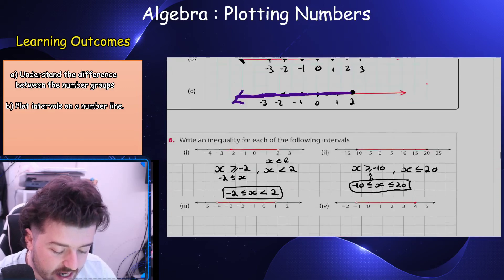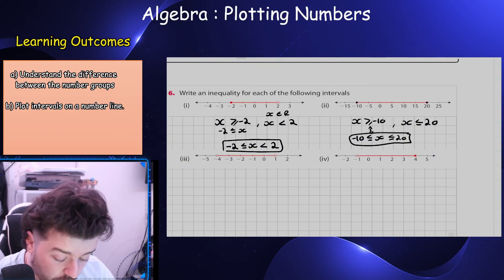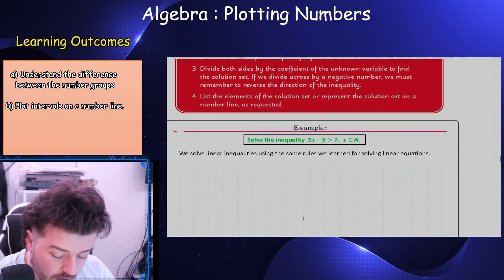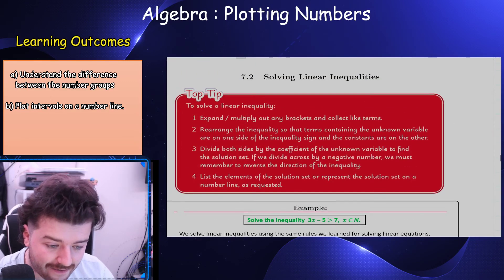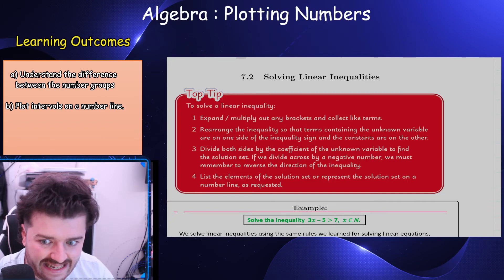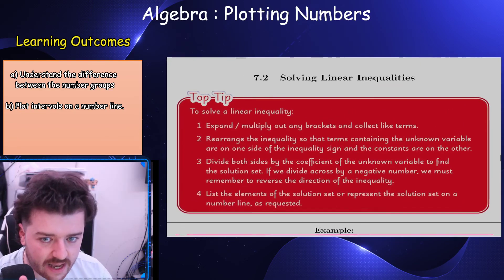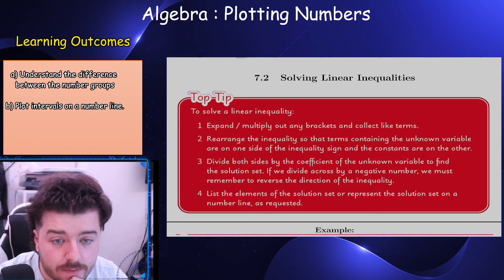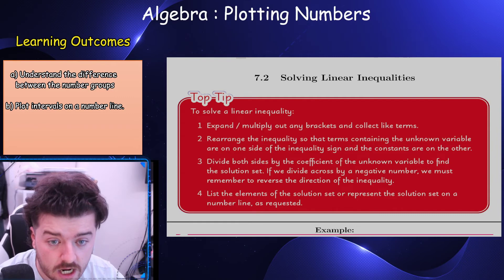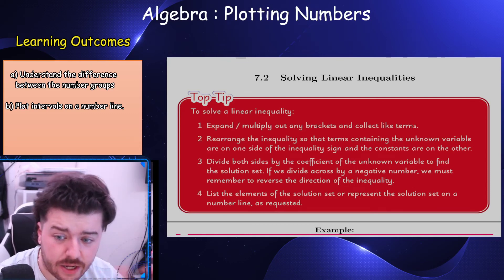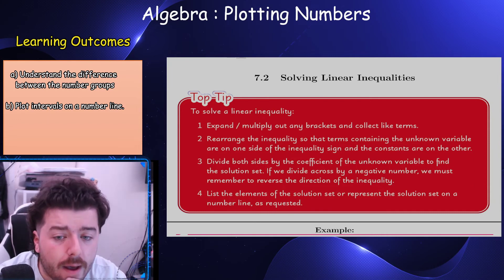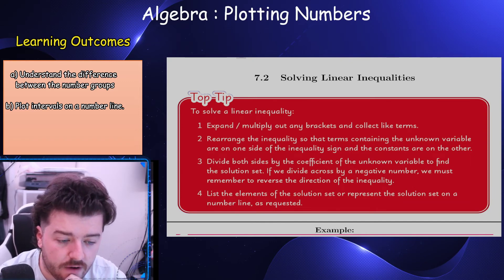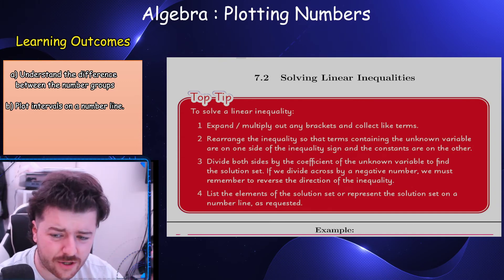It takes some practice, but it's always important to know the correct notations. Now the next part of this video: solving linear inequalities. Step one — expand any brackets and collect like terms. Step two — rearrange so the unknown variable is on one side of the inequality sign. Step three — divide both sides by the coefficient of the unknown variable.